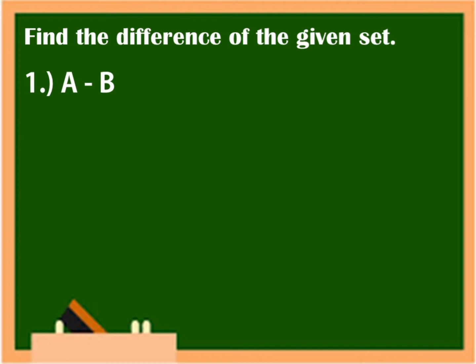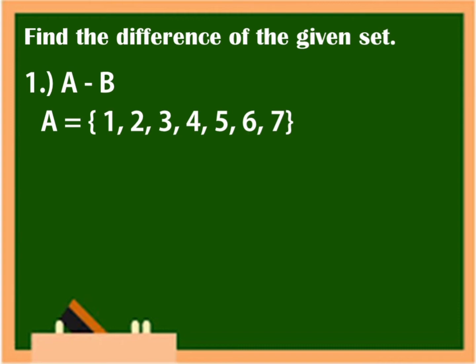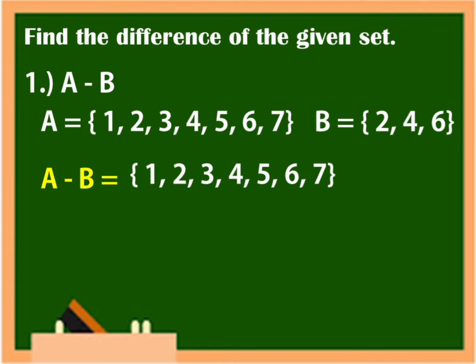Find the difference between A and B, if A is equal to {1, 2, 3, 4, 5, 6, 7} and set B is equal to {2, 4, 6}. To find the difference between A and B, first we are going to list the elements of A — which are 1, 2, 3, 4, 5, 6, 7 — minus the elements of B which are 2, 4, 6. To get the difference, remember that it is the elements found in A without the elements in B. Therefore, we must remove 2, 4, and 6 from the elements in A because they are also in B.